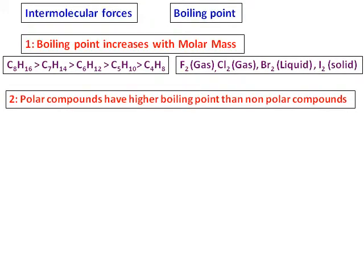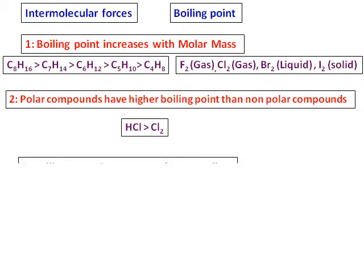The second reason which governs boiling point is that polar compounds have a higher boiling point than non-polar compounds. The example is HCl has a higher boiling point than Cl2. Though the molar mass of HCl is smaller than chlorine, because of it being polar, HCl is a liquid and chlorine is a gas.